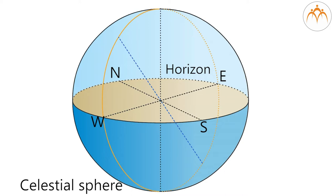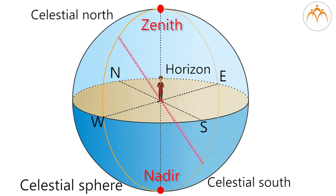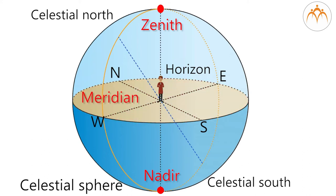A few terms related to the celestial sphere: Zenith — when you stand at the center of the sphere, the point exactly above you is known as zenith. Nadir — the point exactly below you is known as nadir. Celestial poles — if we extend the axis of rotation we get the celestial north and south poles. Meridian — the great circle passing through both celestial poles and the observer's zenith and nadir is called the meridian.